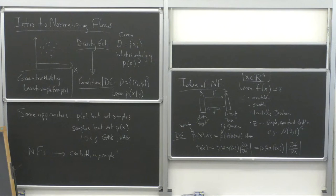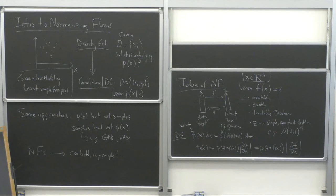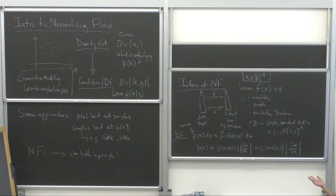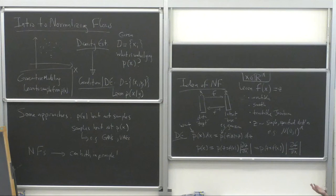Question: do your results depend on the choice of the base distribution? In principle, it shouldn't matter what you choose. But in practice, it may matter. If your distribution is very multimodal and you pick a base distribution with the same number of modes, the model may learn more easily and converge faster. If you pick the wrong distribution, it may never converge.